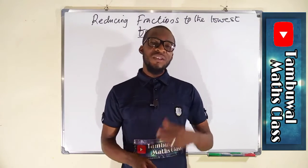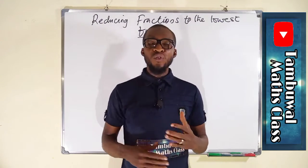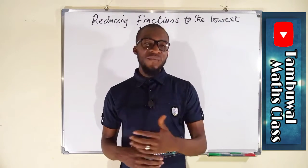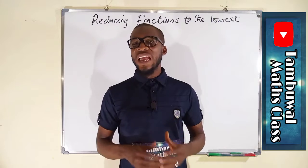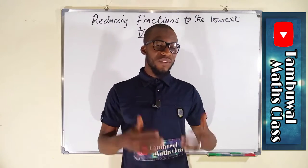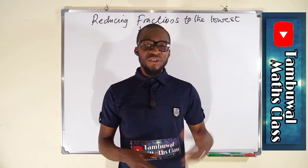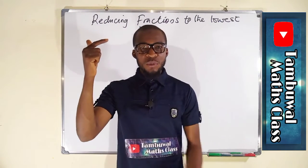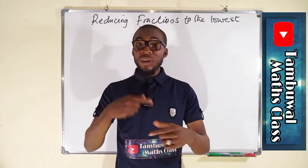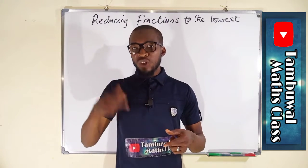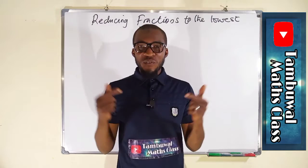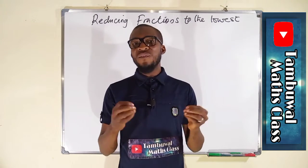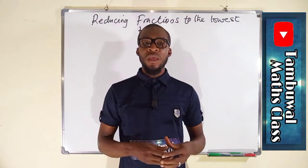Hello, good day viewers. In today's tutorial we are going to look at how to reduce fractions to their lowest terms. Reducing fractions to their lowest terms is the idea of finding the lowest equivalent fraction. To reduce any fraction to its lowest term, you have to divide the numerator and denominator by their common factors simultaneously until you get a fraction in which they have no common factor.